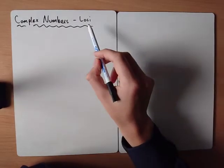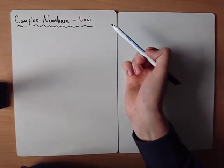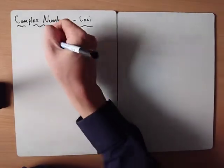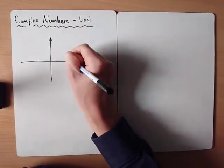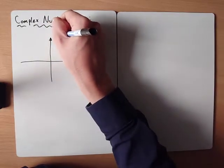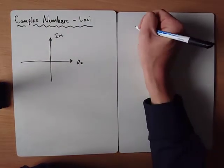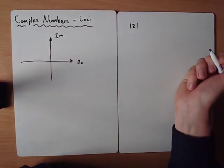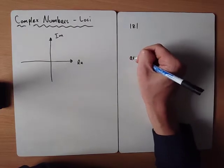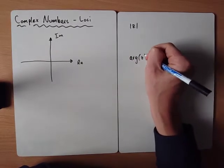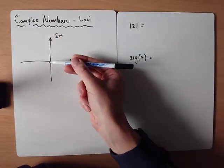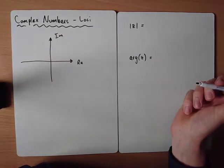In this video we're going to take a look at complex numbers and loci. At this point we should already know that we can represent complex numbers on an Argand diagram. The real axis goes horizontally, the imaginary axis vertically. We should also know about the modulus of a complex number — the magnitude or distance from the origin — and the argument, which is measured from the positive real axis anti-clockwise.